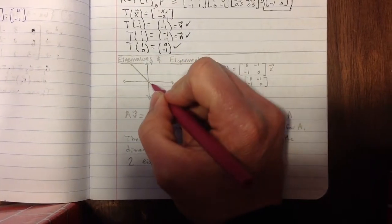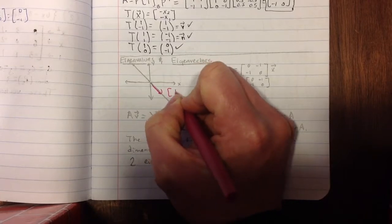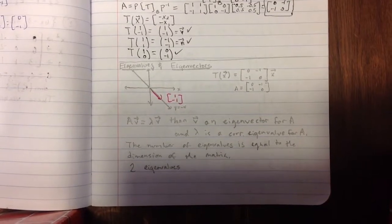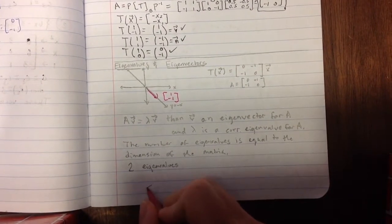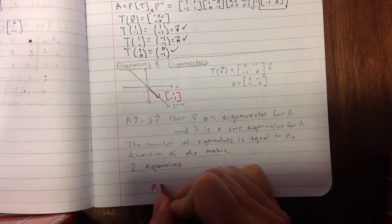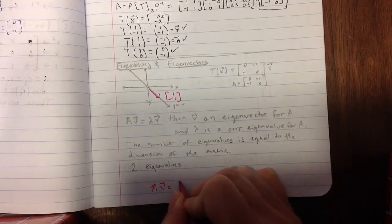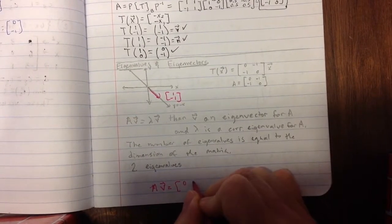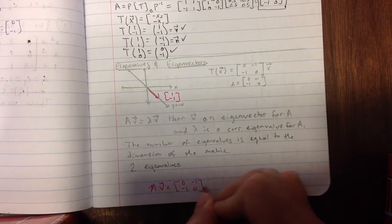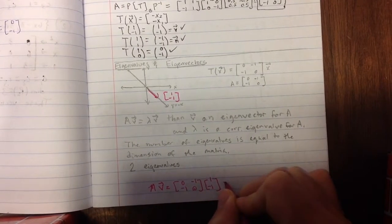If I look at this vector in the direction of that line, [1, -1], what does the matrix do to it? So if I take A times this vector v, I get [0, -1; -1, 0] times [1, -1].